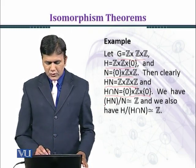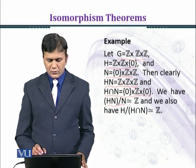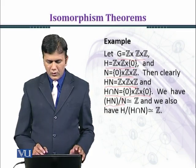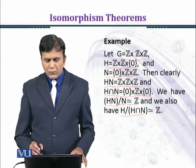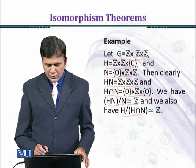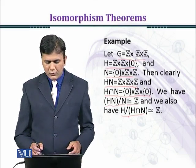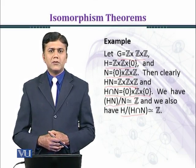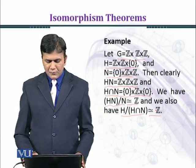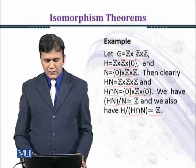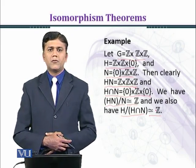We have HN over N: since HN = Z × Z × Z = G, modding out N gives something isomorphic to Z. We also have H over H ∩ N: H = Z × Z × {0} modded out by H ∩ N = {0} × Z × {0}, which is also isomorphic to Z. This example illustrates that H over H ∩ N is isomorphic to HN over N, which is the Second Isomorphism Theorem.